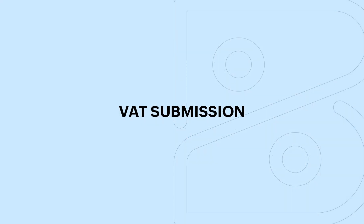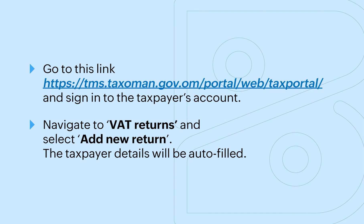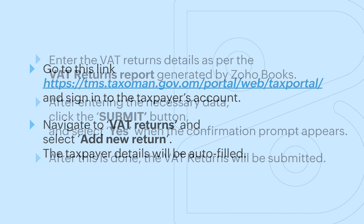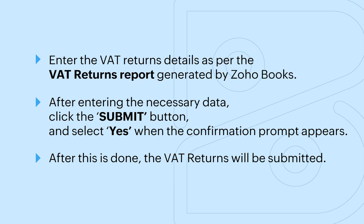Now let's see how to submit VAT returns in Oman's tax portal. Go to the tax portal link and sign in to the taxpayer's account. Navigate to VAT Returns and select 'Add New Return'. The taxpayer details will be auto-filled. Enter the VAT returns details as per the VAT returns report generated by Zoho Books. After entering the necessary data, click the 'Submit' button and select 'Yes' when the confirmation prompt appears. After this is done, the VAT returns will be submitted.